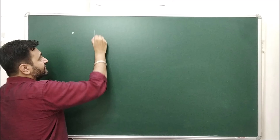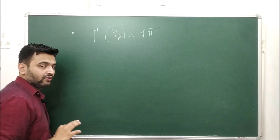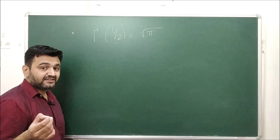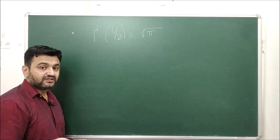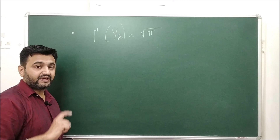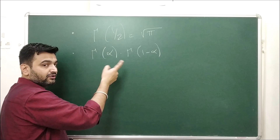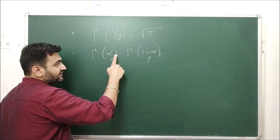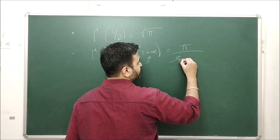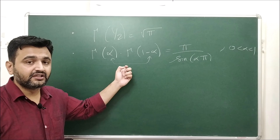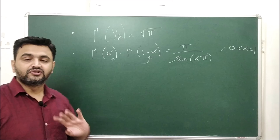The third property is Γ(1/2) = √π. To prove this rigorously requires double integration, which is beyond a single-variable calculus course, but it can also be proved using the beta function in the next lecture. The fourth property is the reflection formula: Γ(α) · Γ(1−α) = π / sin(απ), where 0 < α < 1. Notice that α + (1−α) = 1. The proof again involves double integration, so it will be skipped here. These are the four properties; now let's solve some problems.